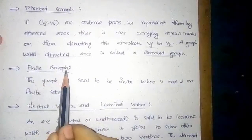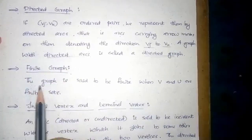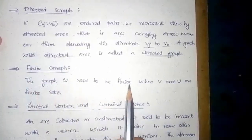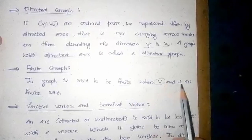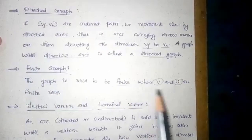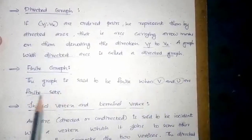Finite graph. The graph is said to be finite when V and U are finite sets.